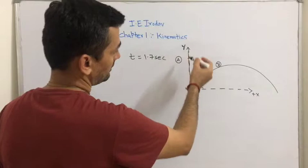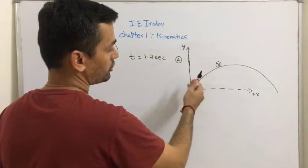One body is thrown straight up, which is my y-axis. And one body is given a velocity at an angle theta from the horizontal.